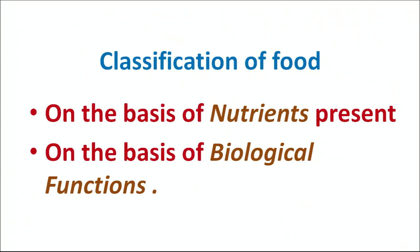Classification of food. Food has been divided into two basic categories: on the basis of the nutrients present in the food, and on the basis of biological functions which it performs in our body. Friends, whenever you purchase any food item from the market and look at the back of the package, the details of the nutrients present in the food are given.